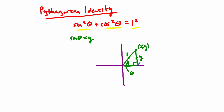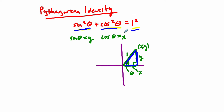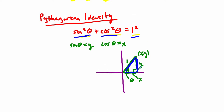And the cosine of theta is equal to this adjacent side, x, over the hypotenuse one. So the cosine of theta is equal to x. You could say that x squared plus y squared equals the hypotenuse squared, one squared — and that's the same as saying sine squared plus cosine squared equals one. And that's just a little introduction into the identity — that's the idea of where it comes from.